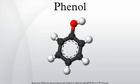Phenol was discovered in 1834 by Friedlieb Ferdinand Runge, who extracted it from coal tar. Coal tar remained the primary source until the development of the petrochemical industry. In 1841, the French chemist Auguste Laurent obtained phenol in pure form. In 1836, Auguste Laurent coined the name phène for benzene, which is the root of the word phenol.